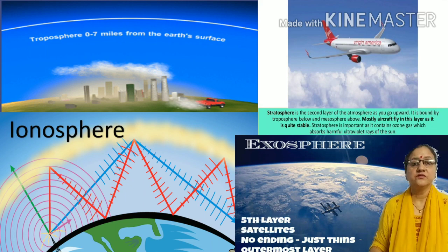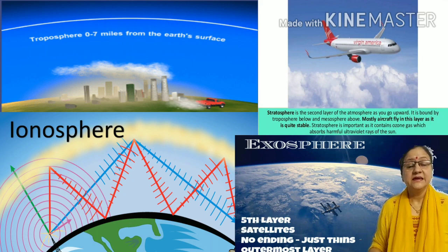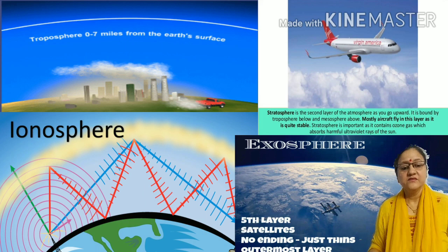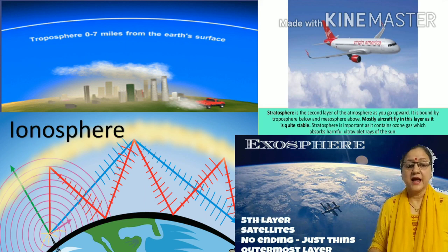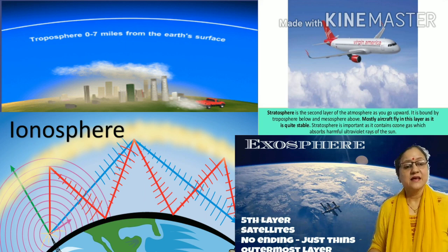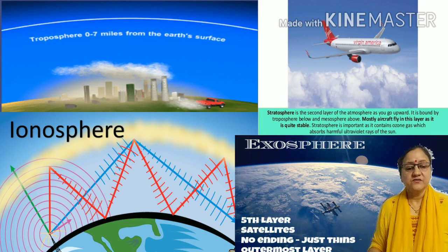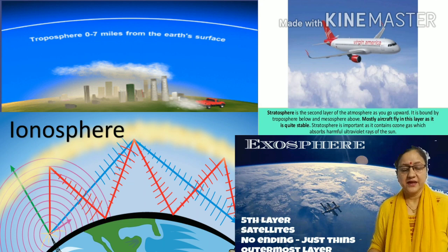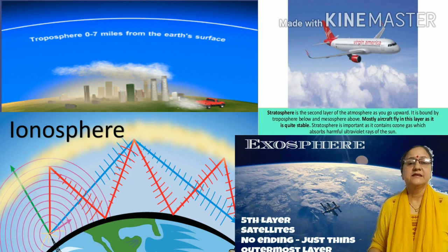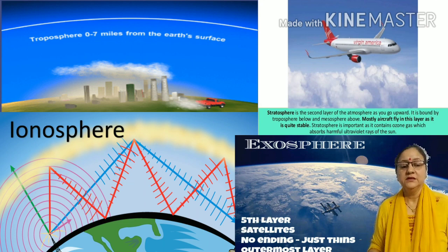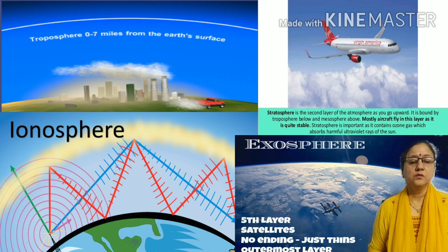The temperature of the troposphere decreases with increase in altitude. Altitude means height. It is the layer in which life exists, and it is the densest layer of the atmosphere.